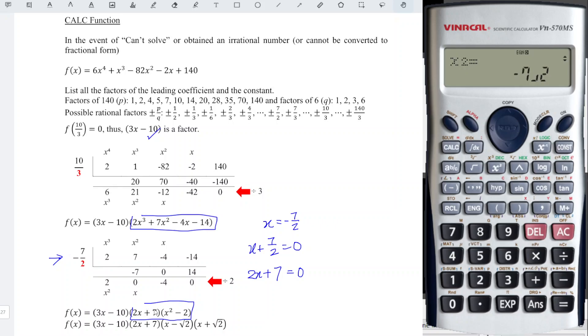So as we can see, 2 divided by 2, we obtain 1. Negative 4 divided by 2, we obtain -2.